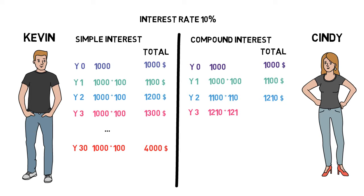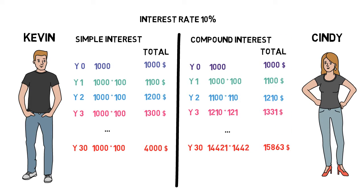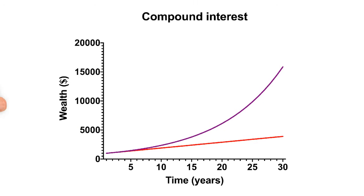After the third year has passed, she gets interest again, and again this year she gets more interest than the last year. After the third year, she gets 10% of $1,210, which is $121, and now she has $1,331 in total. As time passes, the earned interest increases each year, because Cindy does not only get interest on her initial investment of $1,000, but also on the interest earned in previous years. The interest is compounding.